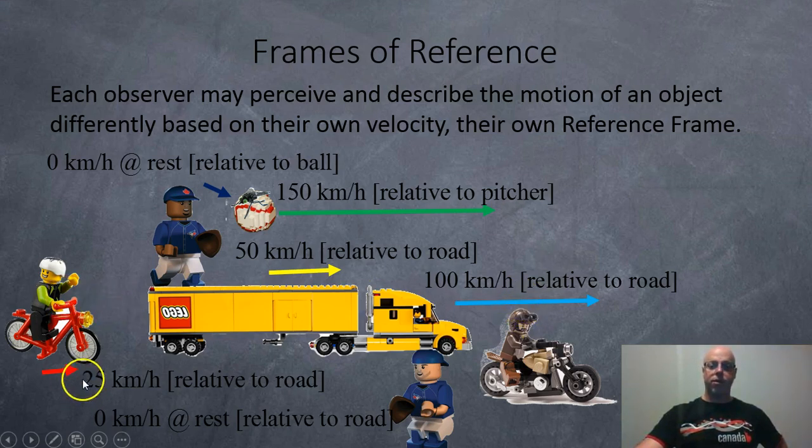Behind, there's a bicycle at 25 km per hour. And there is a catcher on the side of the road moving at 0 km per hour relative to the road.